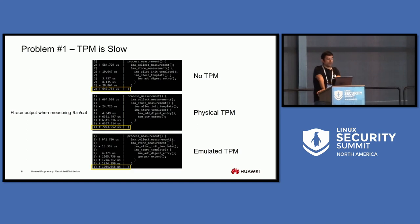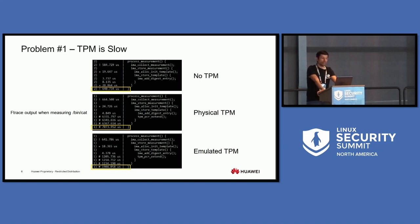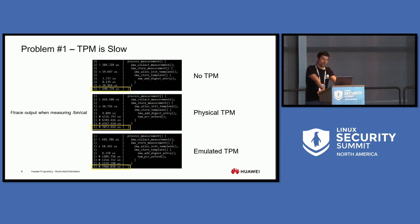The first problem that prevents integrity from reaching the masses is that the TPM is slow. When comparing the time for measuring bin/cat without the TPM, the operation takes 640 microseconds. With a physical TPM, it raises to 7,000 microseconds — a huge increase in overhead. With an emulator TPM, the time is 1,900 microseconds, which is better, but only because the emulator runs in software.